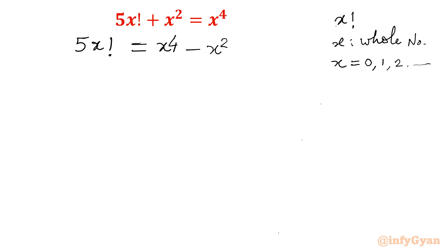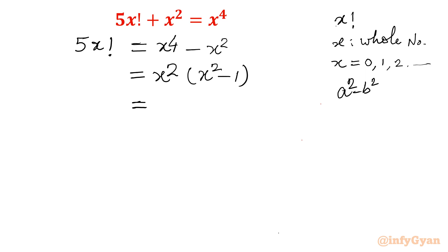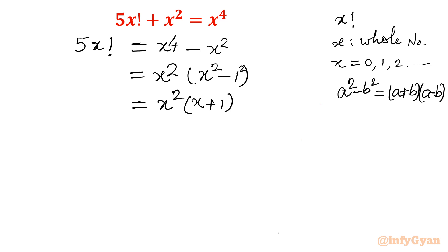I can take x squared common from the RHS, giving x squared times (x² - 1). Now I apply the difference of squares formula: a² - b² = (a+b)(a-b). So x² - 1 = (x+1)(x-1), and the RHS becomes x² times (x+1)(x-1).